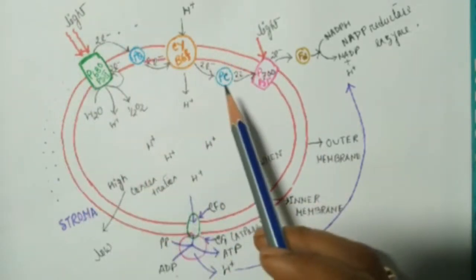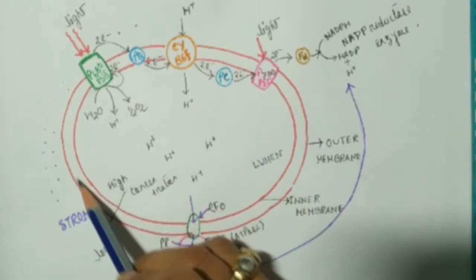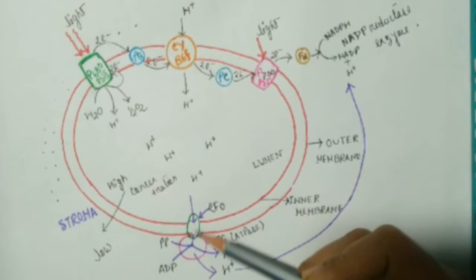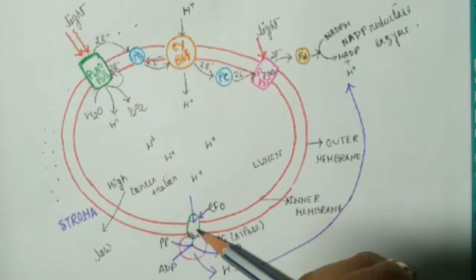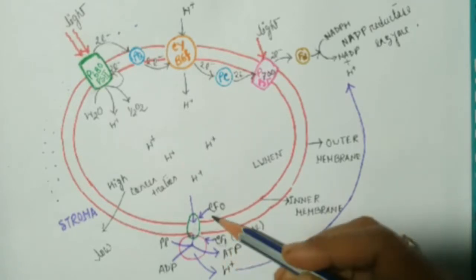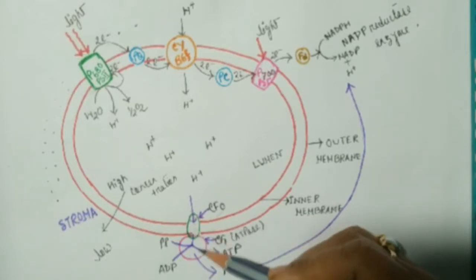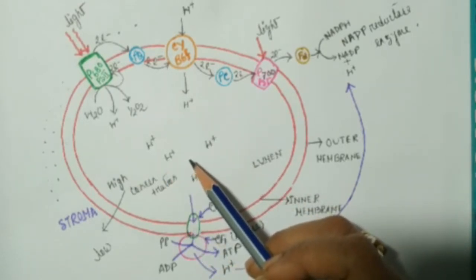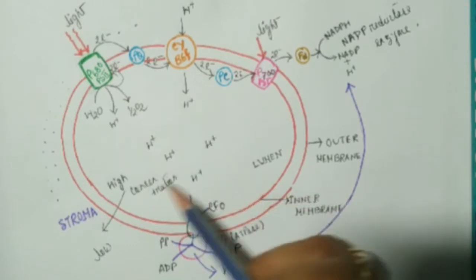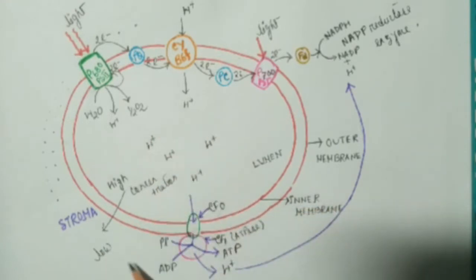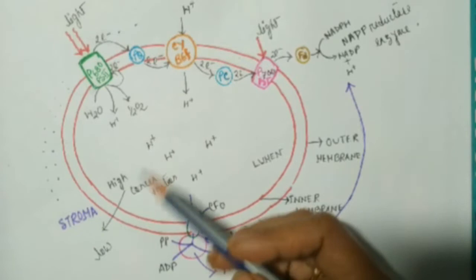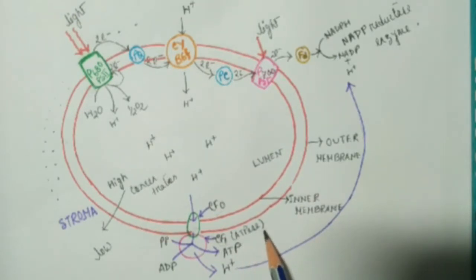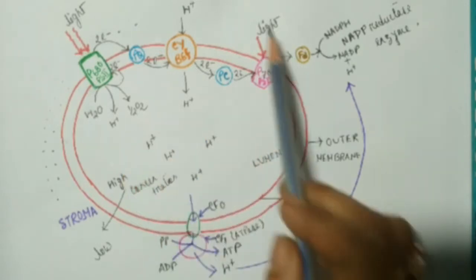For chemiosmotic hypothesis, it requires four things: first, a membrane — this red color line is the membrane of the thylakoid. Second, a proton pump — this green structure plus this pink structure, CF0 and CF1, when these two components combine, they form a structure known as a proton pump. Third, proton gradient — the difference in concentration of protons, where lumen has high concentration and stroma has low concentration. Fourth, ATPase enzyme, which helps in the synthesis of ATP.